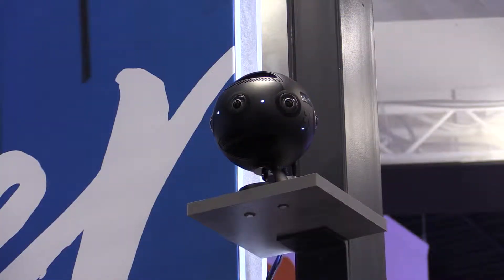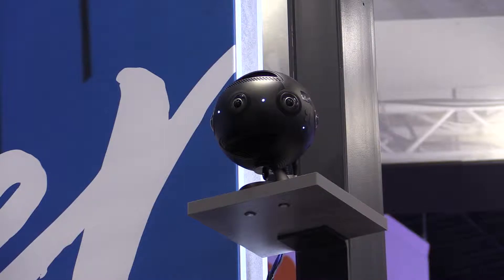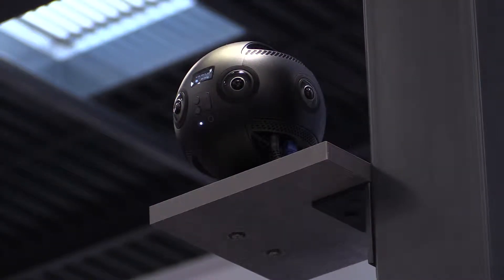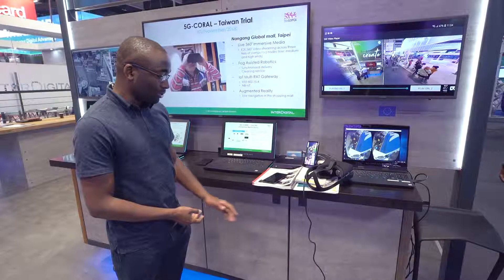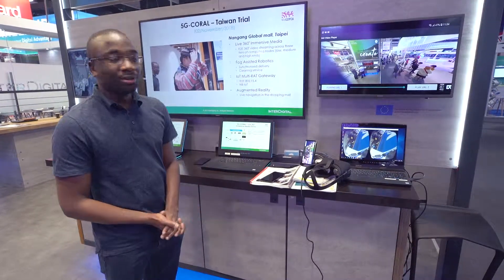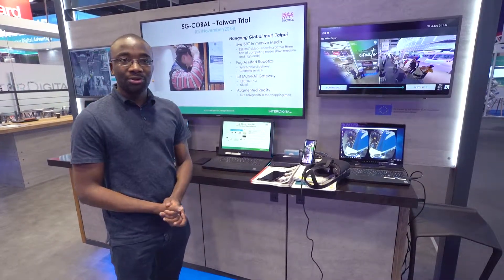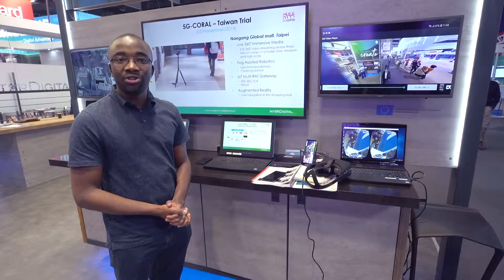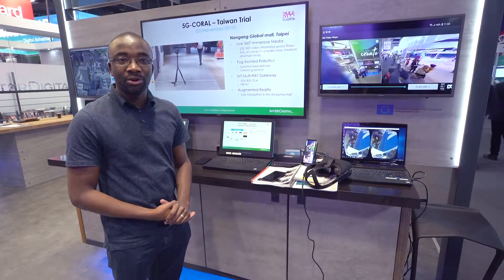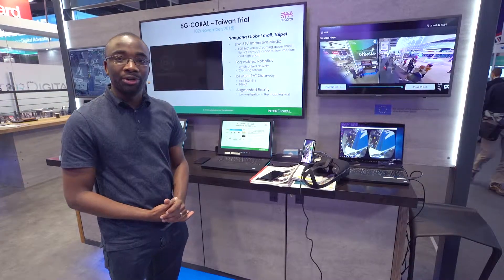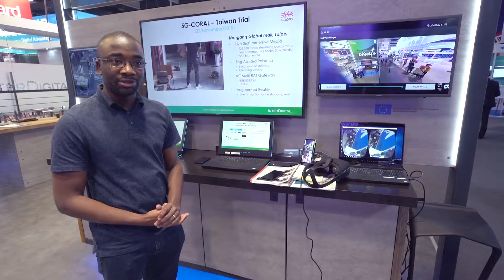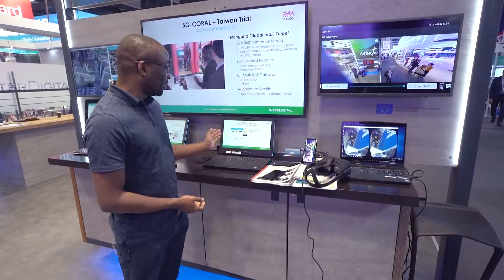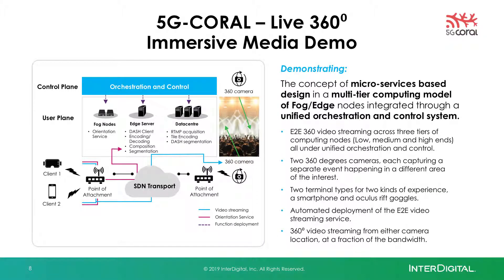In the setup today we've got two cameras streaming 8K video to our data center, which is located underneath the cabinet. The 360 video is then broken down into a set of chunks, and each of these chunks is encoded into high definition or low definition tiles. The chunks are then kept in a cache awaiting a request from the edge server.